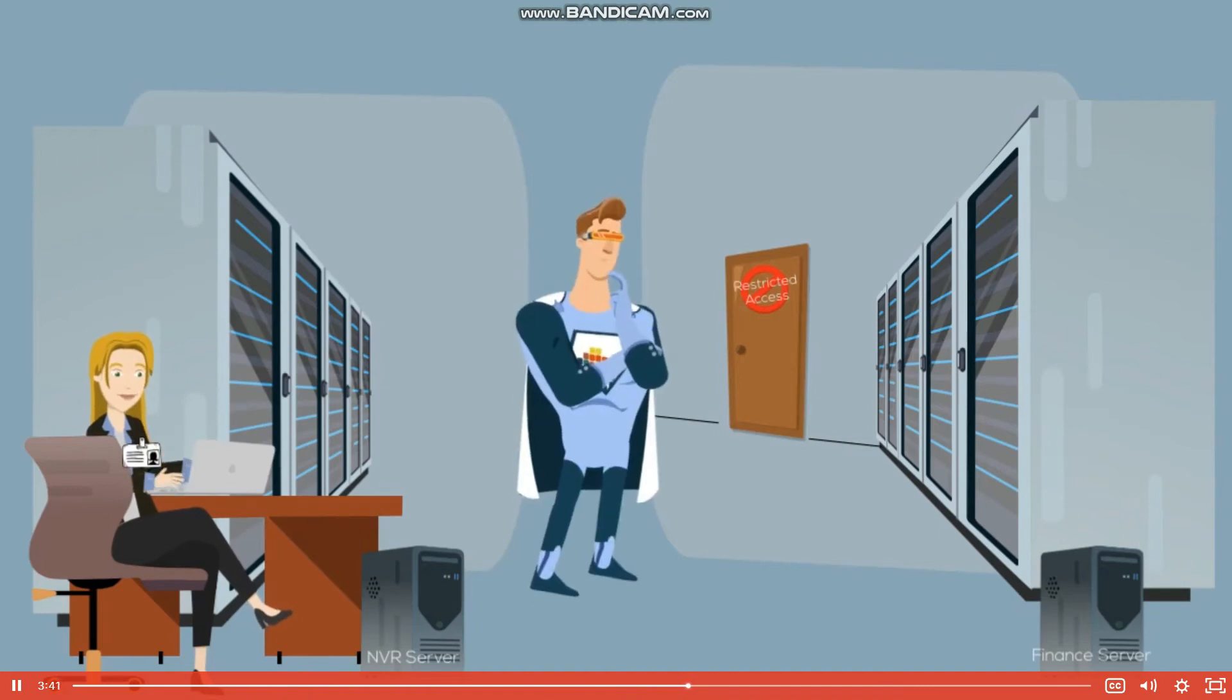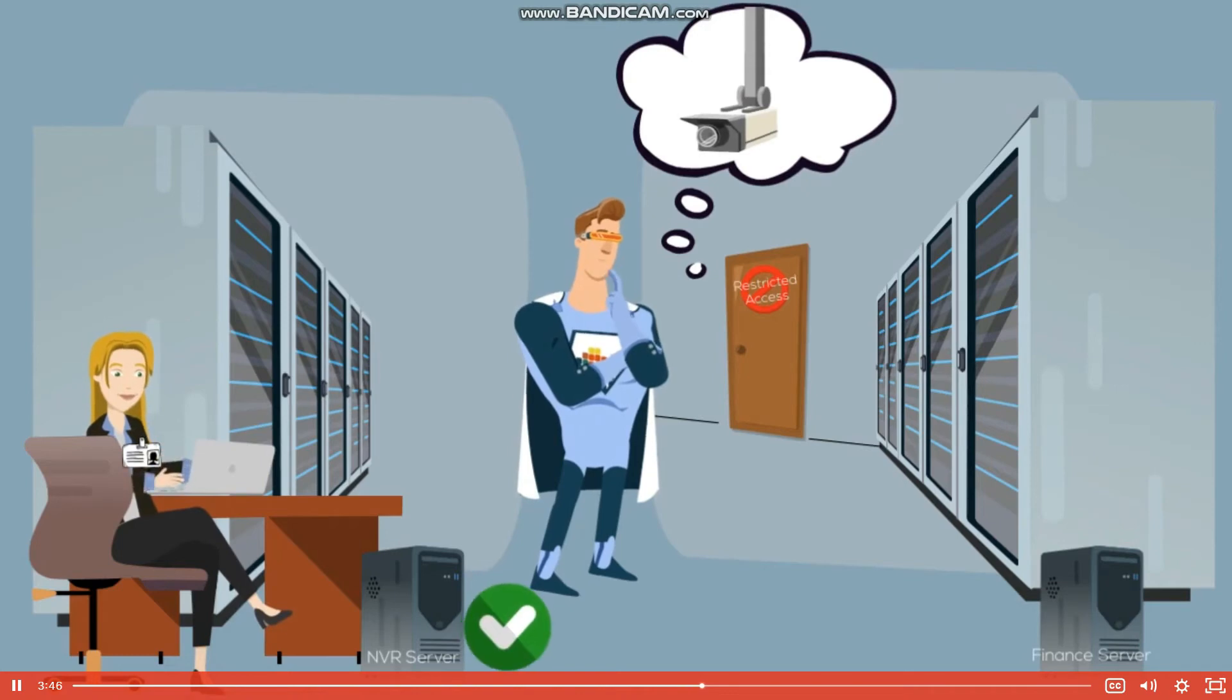For example, an IP camera should be able to send and receive traffic from the NVR server on the network, but should not have access to any of the sales or finance servers. The limited and controlled access supports the benefits of IOT systems, while limiting the damage they can do to a network.